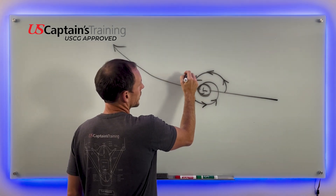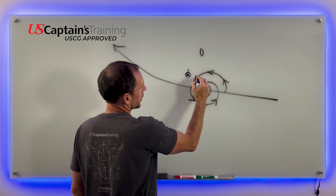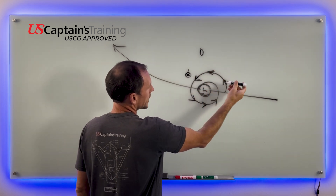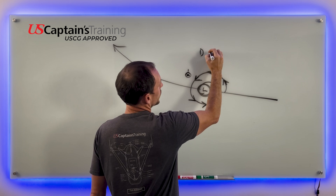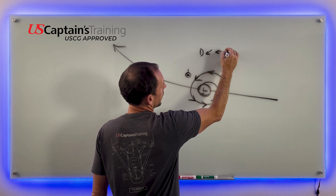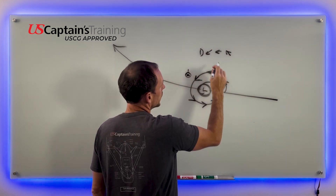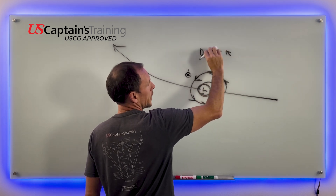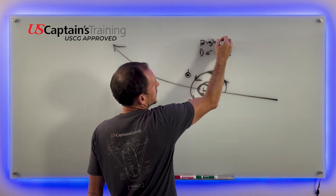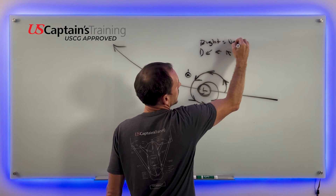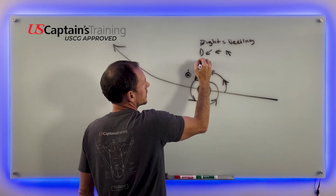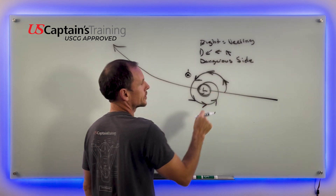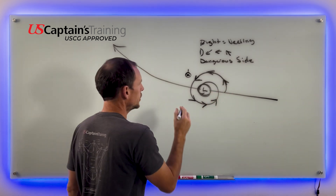In scenario one, you're on the dangerous side. As the storm proceeds past you, you experience this wind, then this wind, then this wind — a right shift. A right shift equals veering wind, which means you're on the dangerous side of the storm.